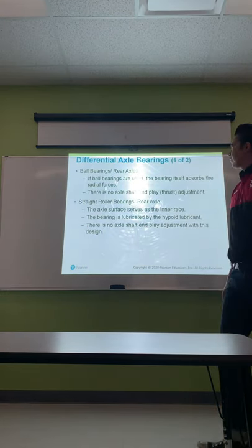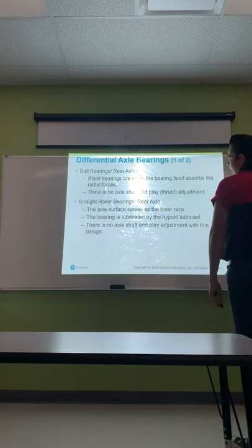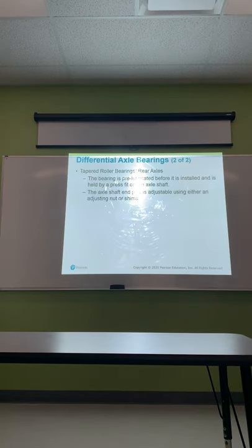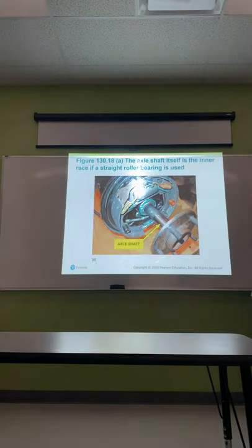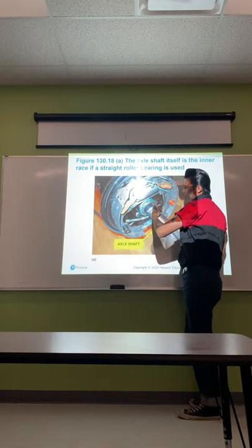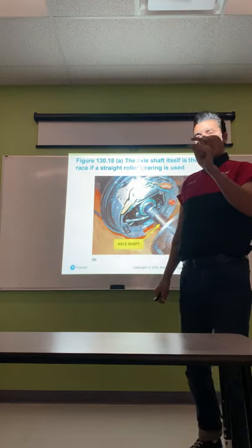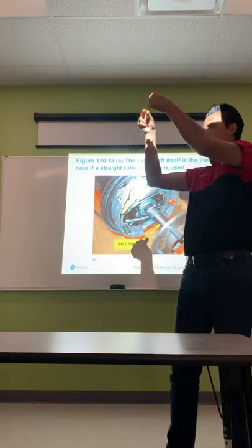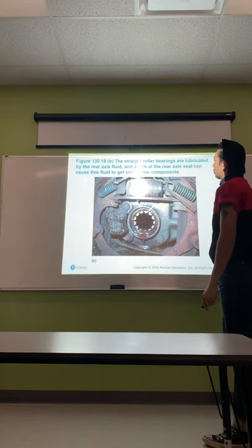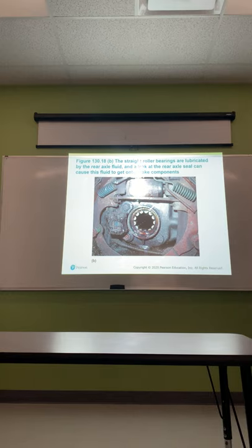Differential axle bearings: ball bearings absorb the radial forces with no axle shaft end play or thrust adjustment. Straight roller bearings use the axle surface as the inner race and are lubricated by hypoid lubricant, with no axle shaft end play adjustment. Tapered roller bearings are pre-lubricated before installation and held by press fit on the axle shaft — axle shaft end play is adjustable using either an adjustment nut or shims. The straight roller bearing is shaped like little barrels going around the inside of the housing, so when you slide the axle in, it rides on those bearings.